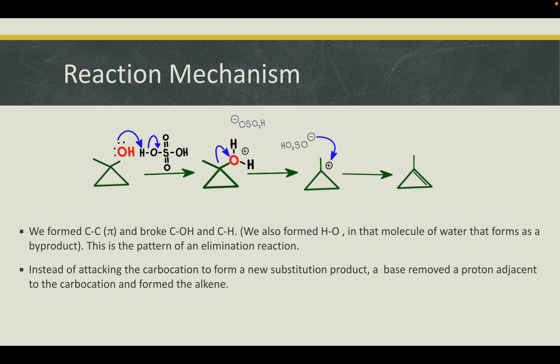As we can see in our reaction mechanism, we are doing an elimination of an alcohol. To do an E1 reaction of an alcohol, we need to use either H₂SO₄, H₃PO₄, or TsOH as our catalyst. Here we chose to use H₂SO₄, or sulfuric acid. We formed a carbon-to-carbon pi bond and broke a carbon-to-hydroxide and carbon-to-hydrogen bond. We also formed a hydrogen-to-oxygen bond, and the molecule of water that forms is a byproduct. This is the pattern of an elimination reaction — instead of attacking the carbocation to form a substitution product, a base removes a proton adjacent to the carbocation and forms the alkene. A carbocation is an ion with a positively charged carbon atom.